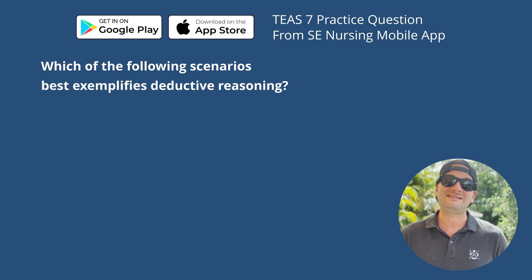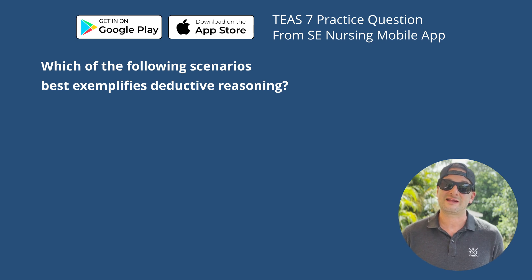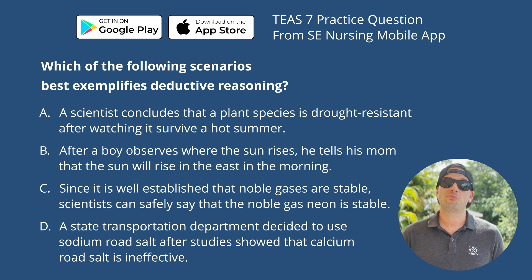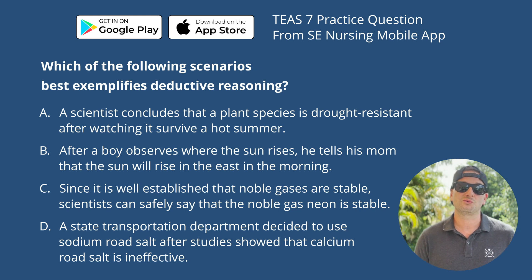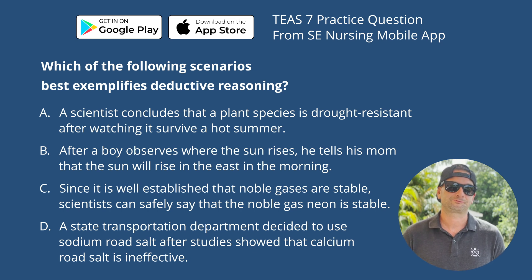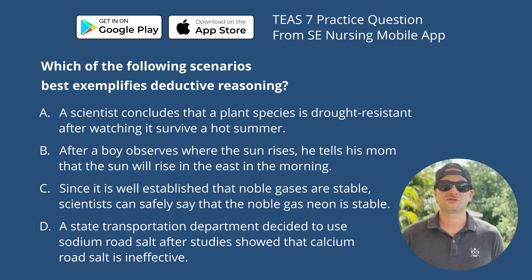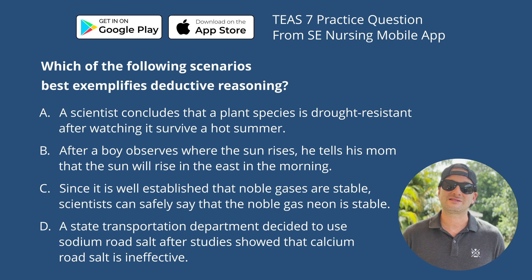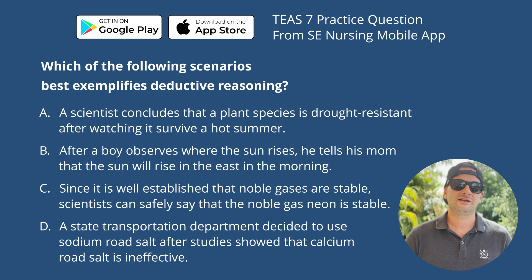This practice question asks: which of the following scenarios best exemplifies deductive reasoning? Choice A: a scientist concludes a plant species is drought resistant after watching it survive a hot summer. Choice B: after a boy observes where the sun rises, he tells his mom the sun will rise in the east in the morning. Choice C: since noble gases are stable, scientists can safely say neon is stable. Choice D: a transportation department uses sodium road salt after studies show calcium road salt is ineffective. Take a second and see if you can answer.